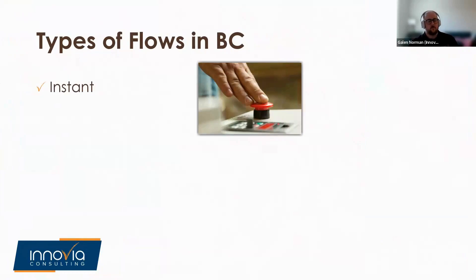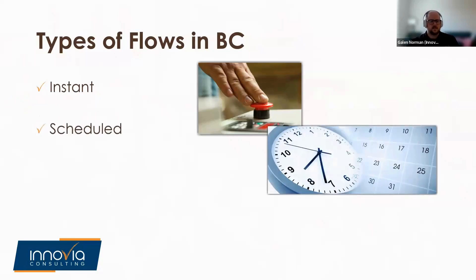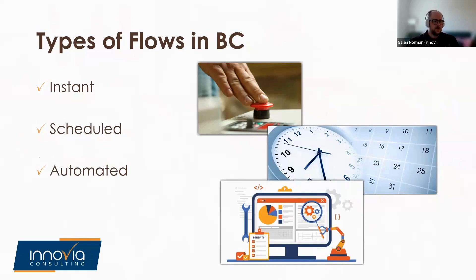Instant flows in Business Central take the form of buttons that can trigger a variety of flows - for example, you can use an instant trigger to schedule a meeting with a particular vendor or set a reminder to follow up with a potential customer. Scheduled flows are a little tricky in Business Central: it's an available flow type, but there aren't any templates available for it and you can't make one directly in BC. Many scheduled flows you can accomplish using Power Automate are already available as job queues in Business Central. Automated flows in Business Central are triggered by some business process - for instance, you can create a flow to notify you whenever a new record is created, notify a team when a master record is blocked, or send a congratulatory message on Teams when a sales goal has been met.